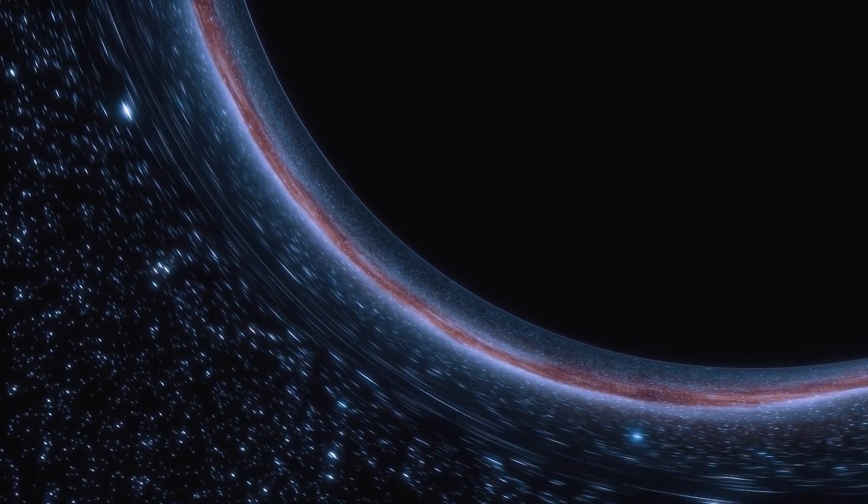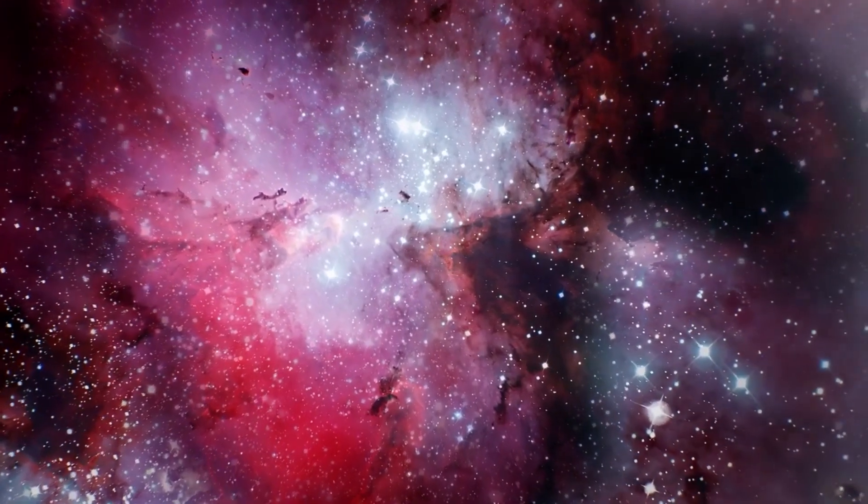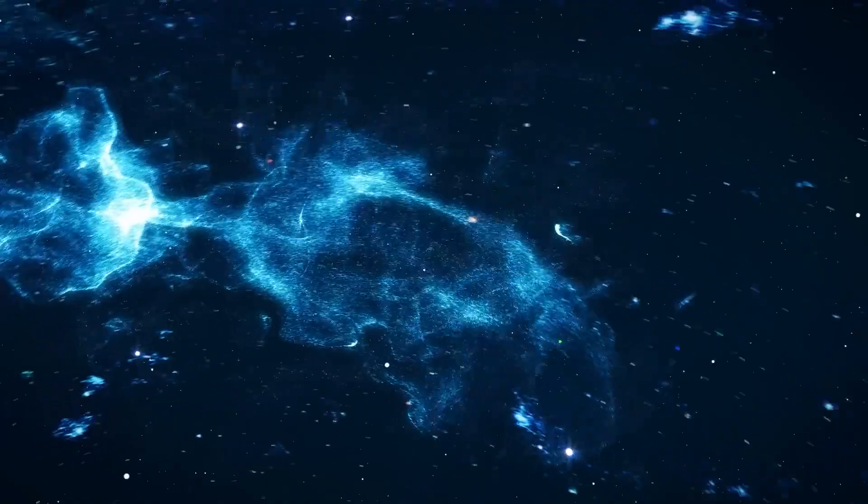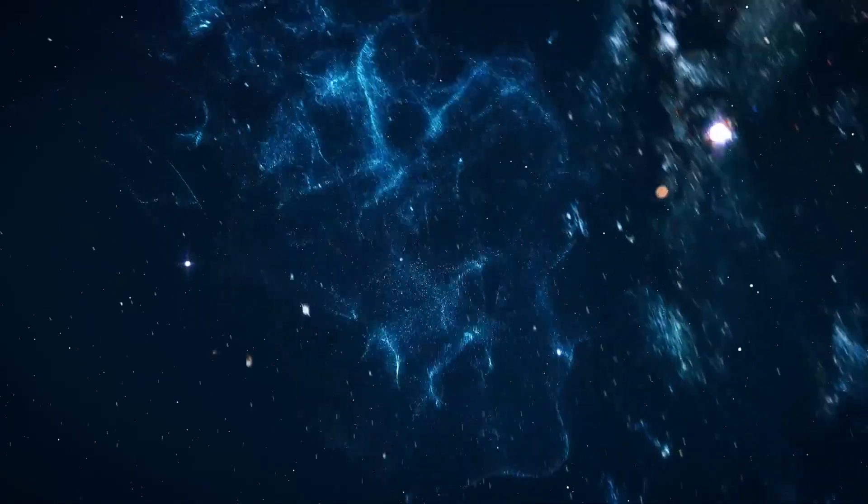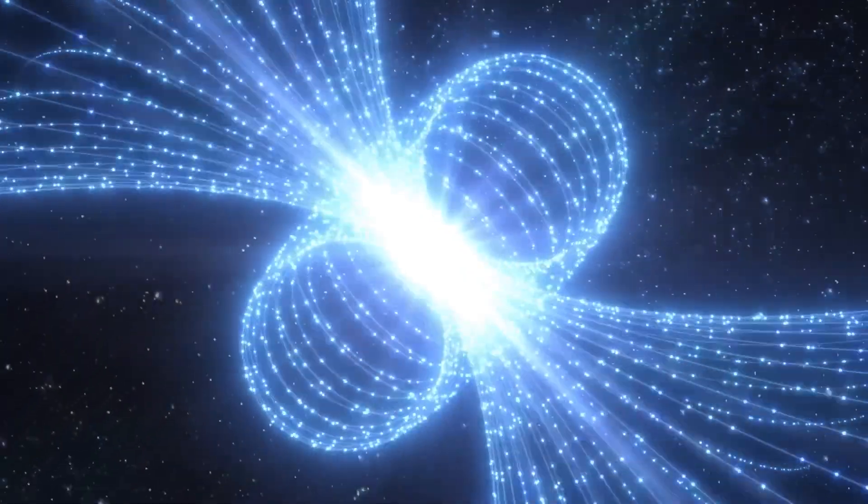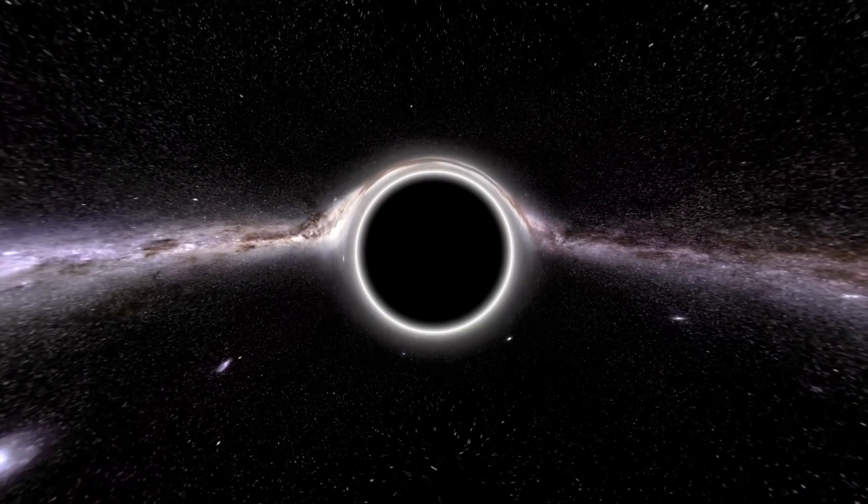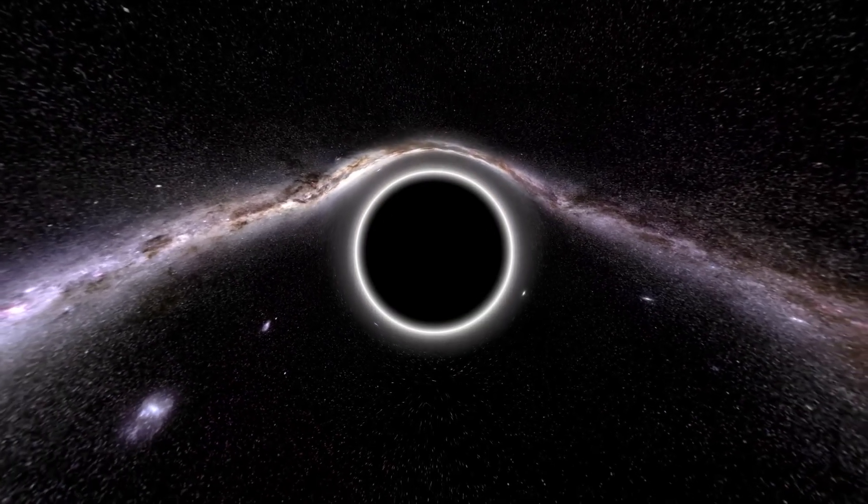Matter falling into a black hole from stars or gas clouds forms an accretion disk around it. The vibrations created by the black hole in its disk are picked up by Earth and amplified by 57 octaves, emitting X-rays due to the superheating of the disk material, which is another observable signature of black holes.